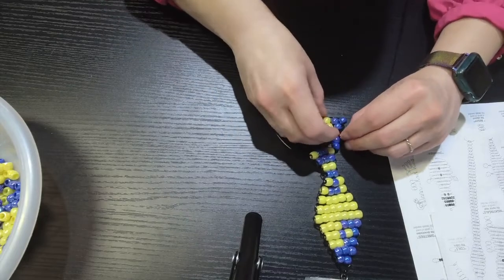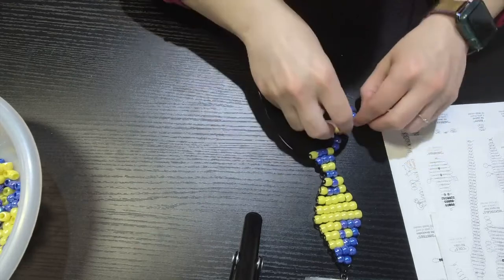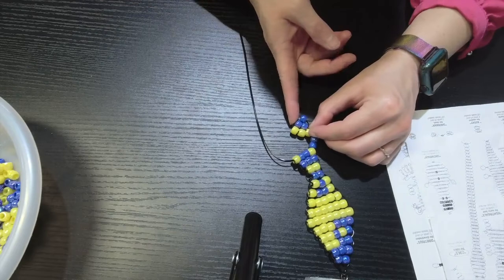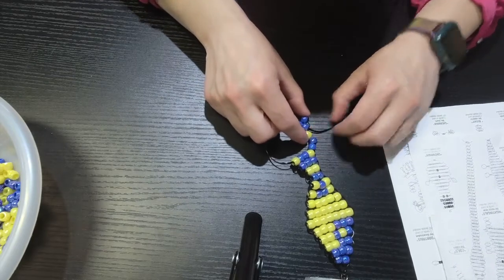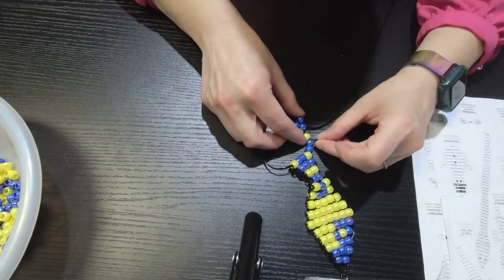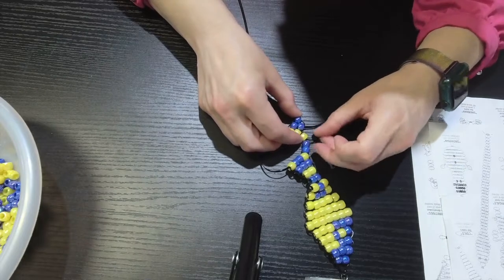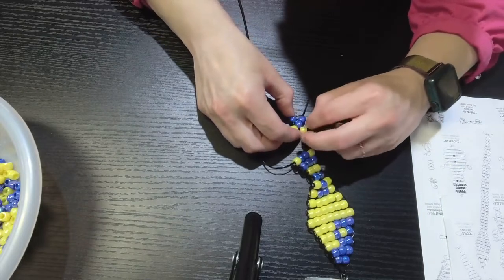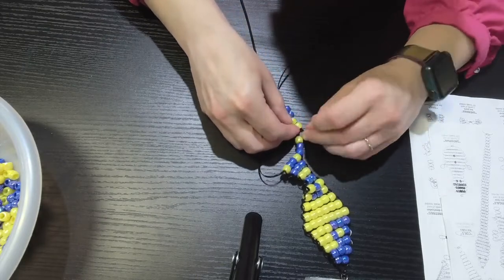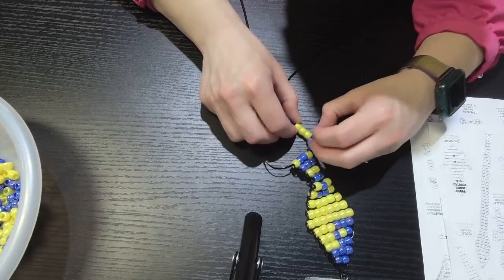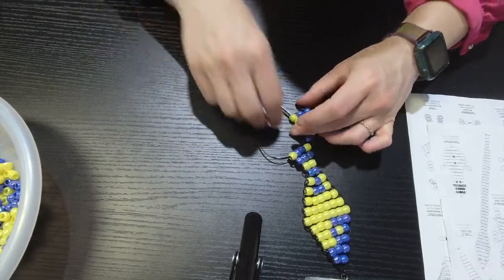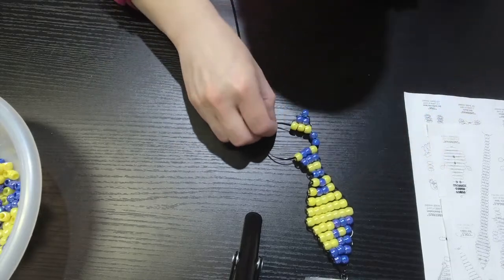So now that we have this around, this other string, the other side, is going to act like the other string when you're doing your normal beading. So we're simply going to thread through from the other direction to kind of lock these beads in place. And again, don't worry if it's a little loose. We can always tighten it up later. So then we're going to do the same thing. We're going to fold it back up.